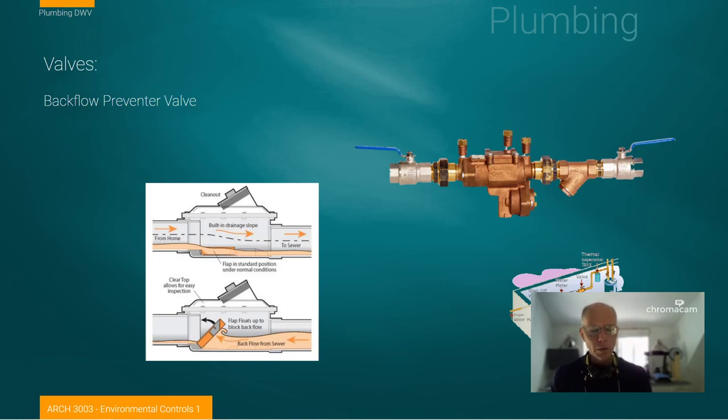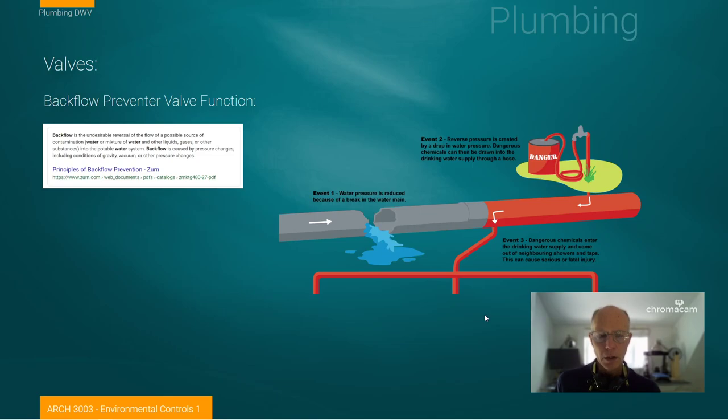So, one of the things that's come into codes is being required more often than it used to be is this idea of a backflow preventer valve. Now, this is the idea of breaking the flow of water in the opposite direction from the supply. And you would say, how could that ever happen? But that can happen in damage to the exterior water supplies to the building.